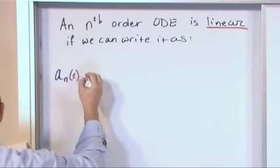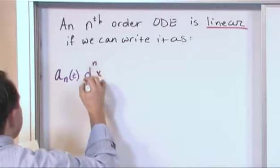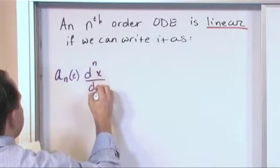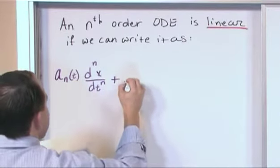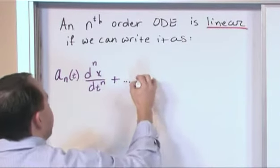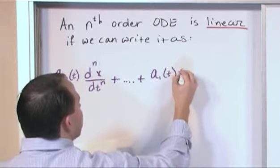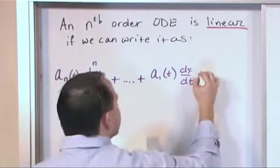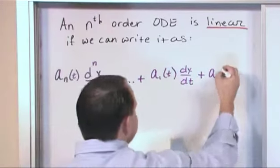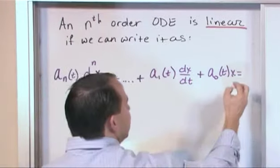a sub n of t times d to the nth derivative of x with respect to t plus dot dot dot dot, we'll talk about that in a minute, a sub 1 of t times dx dt plus a sub 0 or a naught however you want to say it of t times x is equal to E of t.